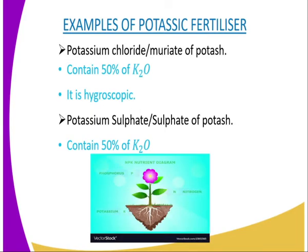Examples of potassic fertilizer include: number one, potassium chloride, also referred to as muriate of potash. It contains 50% of potassium oxide (K₂O) and is highly hygroscopic, meaning it can absorb water from the atmosphere and become damp. The second is potassium sulfate, or sulfate of potash, which also contains 50% of potassium oxide.